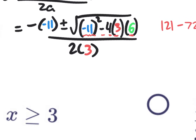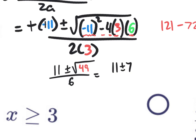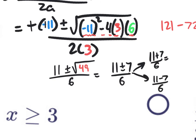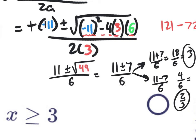We have positive 11 plus or minus the square root of 121 minus 72, which is 49 — a perfect square. All divided by 6. So we really have 11 plus or minus 7 divided by 6. That gives us 11 plus 7 over 6, which is 18 over 6, which equals 3. And also 11 minus 7 over 6, which is 4 over 6, which reduces to 2 thirds. So our two answers are x equals 3 and x equals 2 thirds.